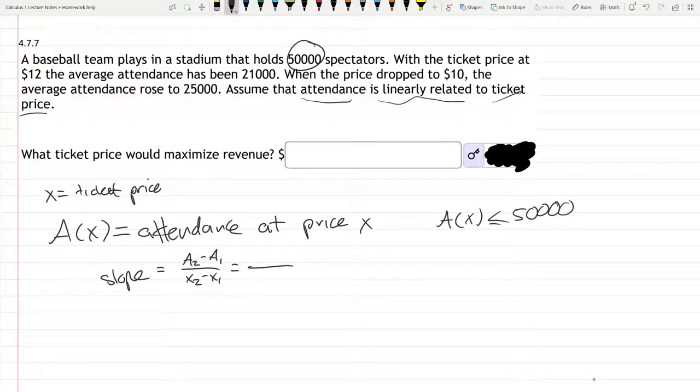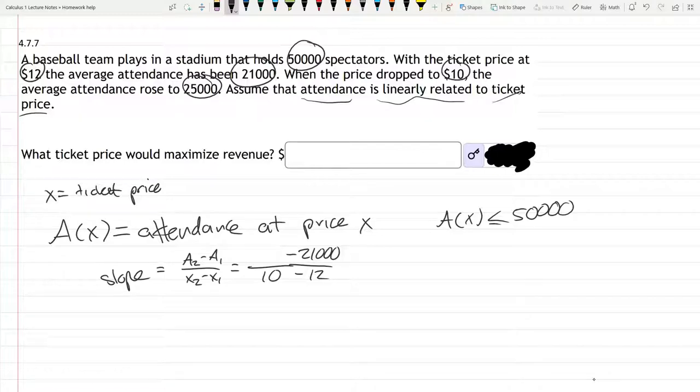At ticket price $12, the average attendance is 21,000. So that's A1 and X1. The other values: when you drop the price to $10, that's X2, the attendance is 25,000.